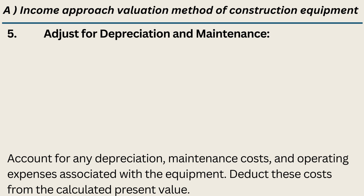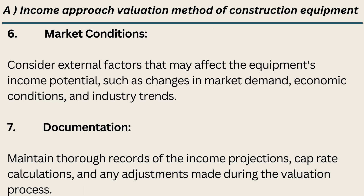Step 5: Adjust for Depreciation and Maintenance. Account for any depreciation, maintenance costs, and operating expenses associated with the equipment. Deduct these costs from the calculated present value. Step 6: Market Conditions. Consider external factors that may affect the equipment's income potential, such as changes in market demand, economic conditions, and industry trends.